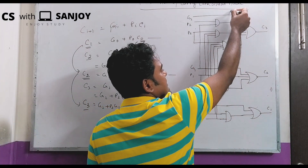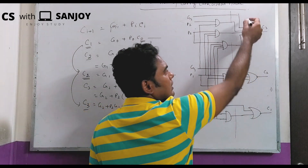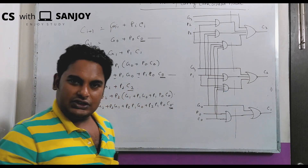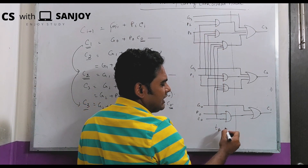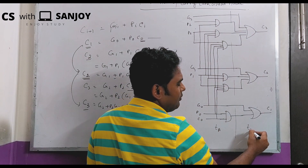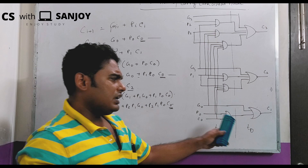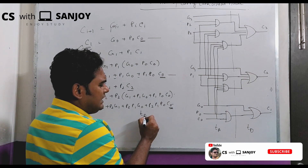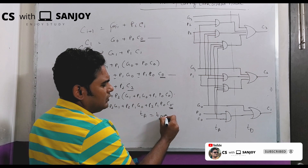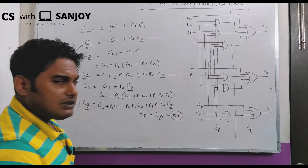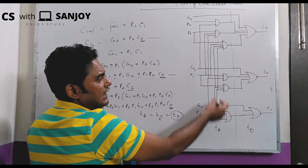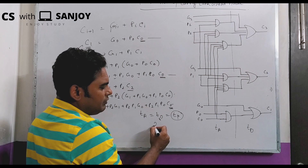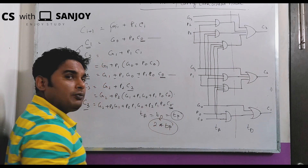Looking at the circuit, the gate levels are: AND gate level, then OR gate level. The longest path goes through one AND gate and one OR gate. So the total propagation delay is 2 × T_P, where T_P is the propagation delay per gate.